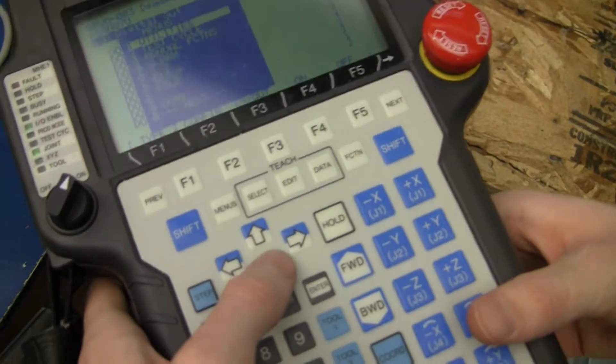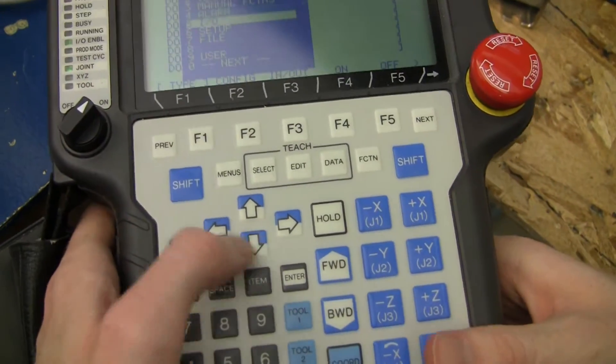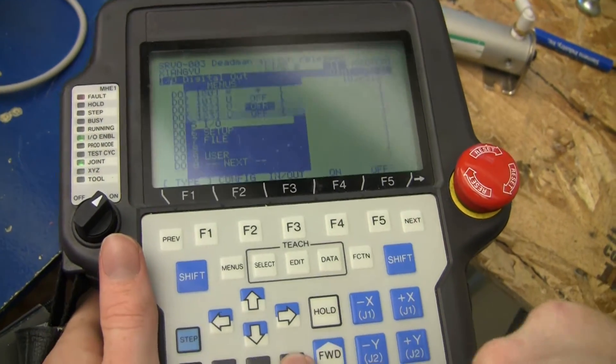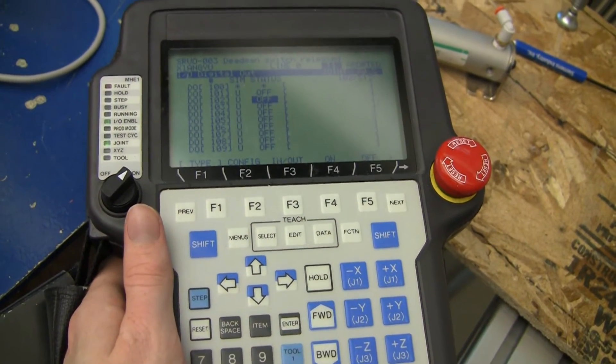So you're going to open menu, you're going to go down to 5, IO, enter, and then it's going to bring you to this IO screen.